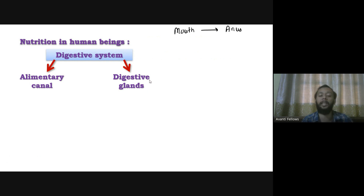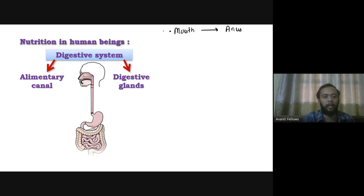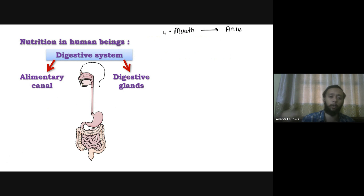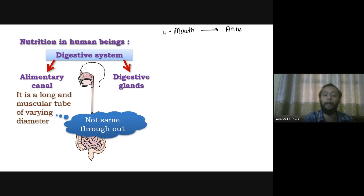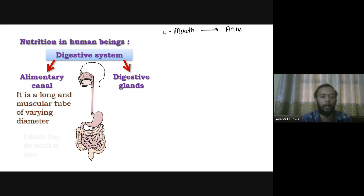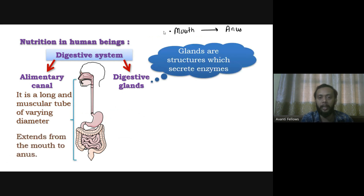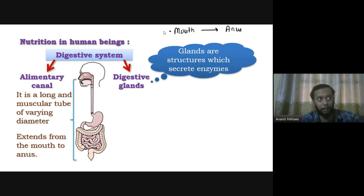The alimentary canal is a long muscular tube of varying diameter, extending from mouth to anus, including the stomach, small intestine, large intestine, and colon. The digestive glands are structures that secrete enzymes. Examples include the salivary gland, gastric gland, pancreas, and liver.